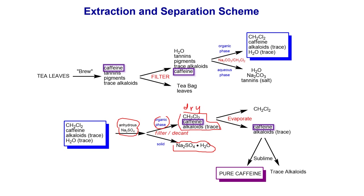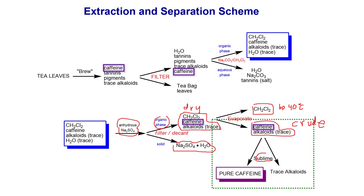In order to get pure caffeine, we simply need to remove the dichloromethane solvent. This organic solvent is volatile with a boiling point of about 40°C, so we can simply evaporate it off. That leaves us with caffeine and alkaloids — we call this crude caffeine, because it's not pure yet. We still need to get rid of the alkaloids, and the next step will be sublimation to get pure caffeine.